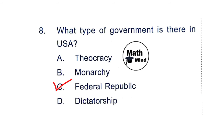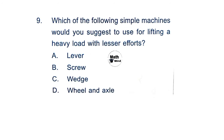Question 8: What type of government is there in the USA? Option C is correct: federal republic. Question 9: Which of the following simple machines would you suggest using to lift a heavy load with lesser effort? Option A is correct: lever. The lever multiplies the effort exerted by the user depending upon the position of the fulcrum.